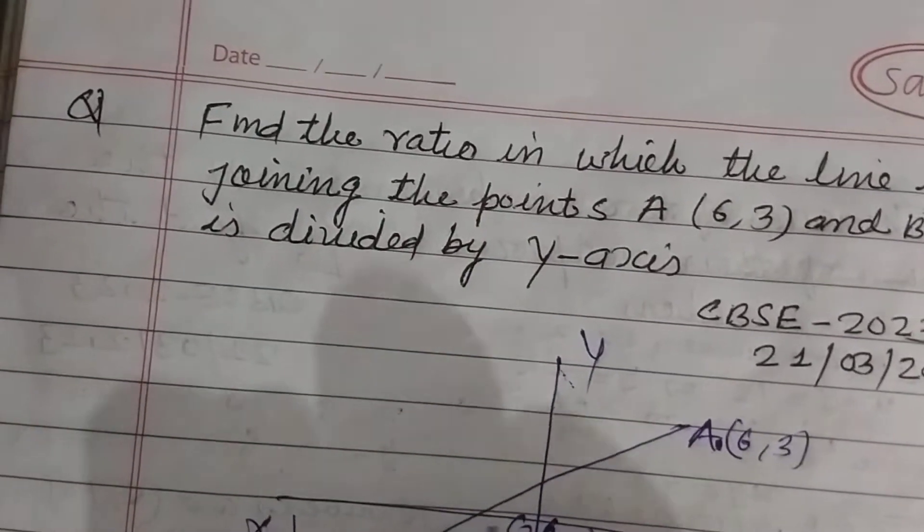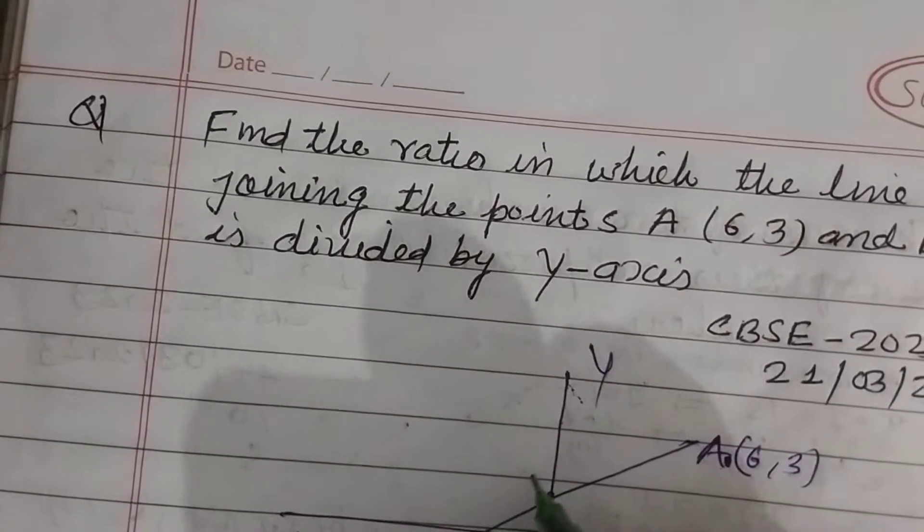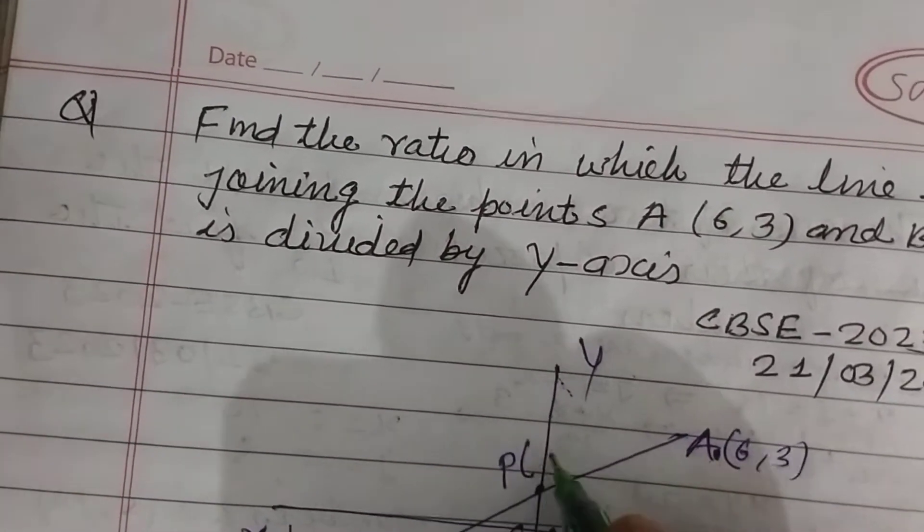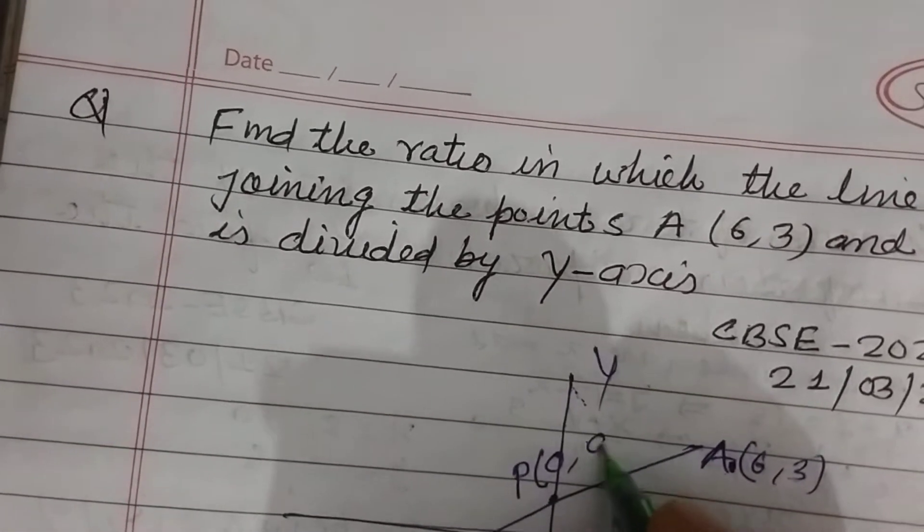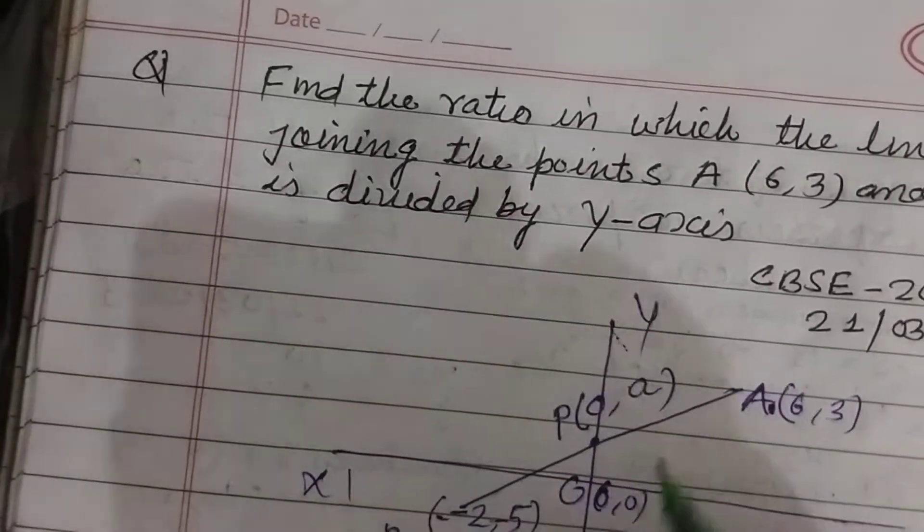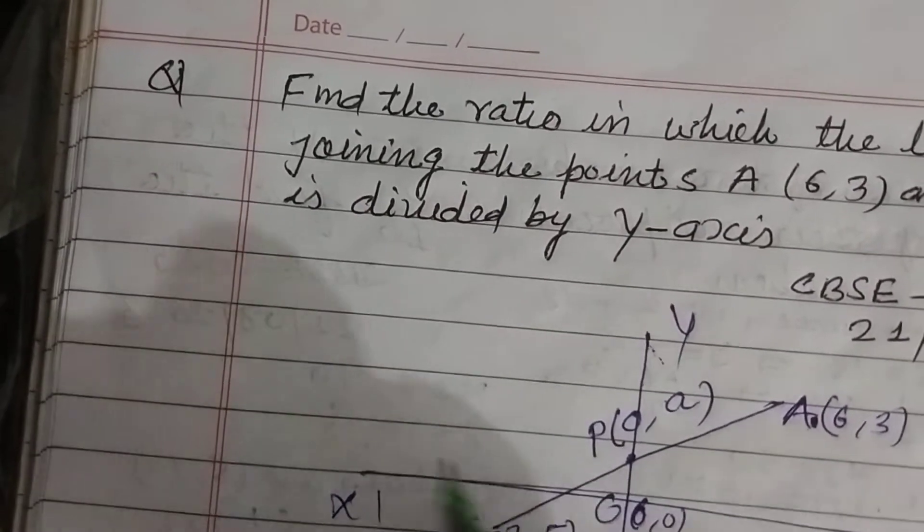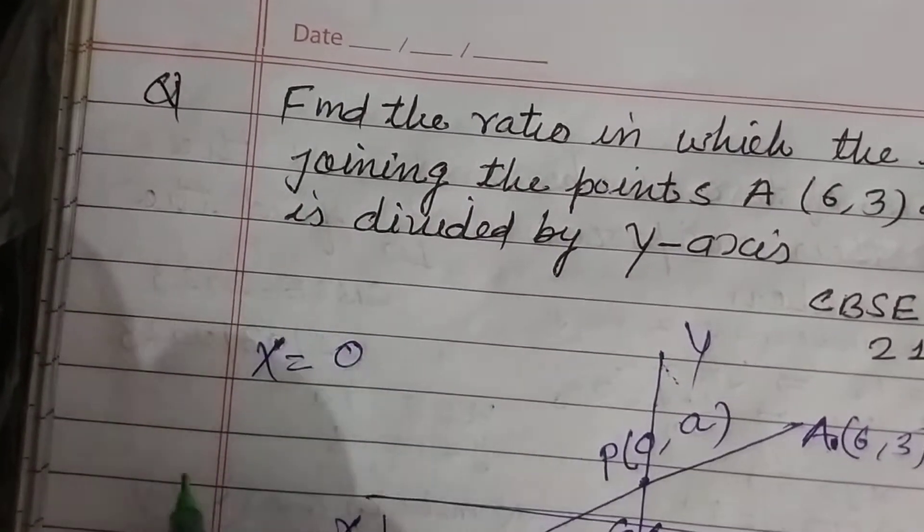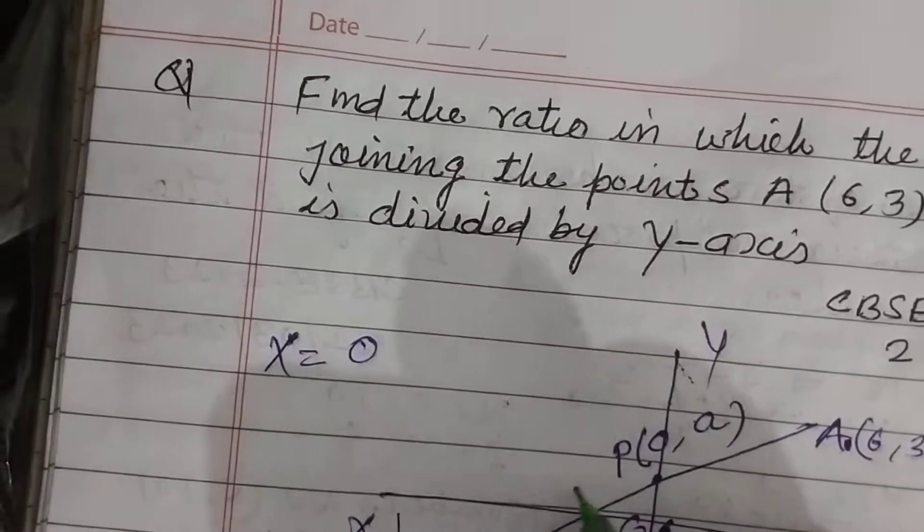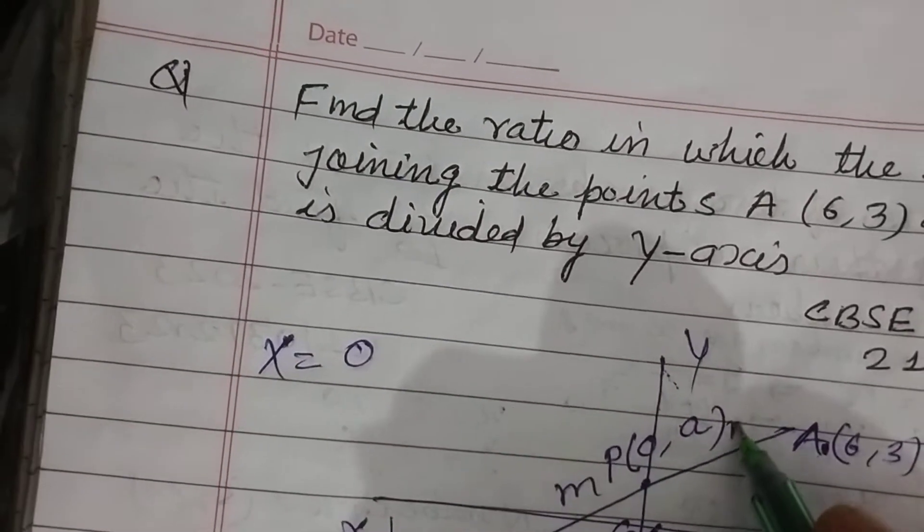And the y-axis divides them, so at y-axis at point P is here. x is 0 and y is A. Okay, now we take x equal to 0. This is M, this is N.